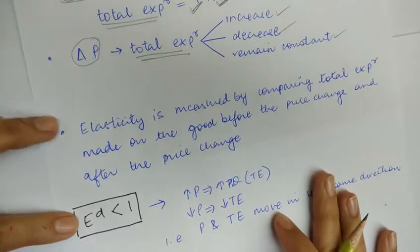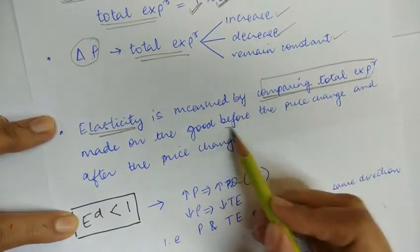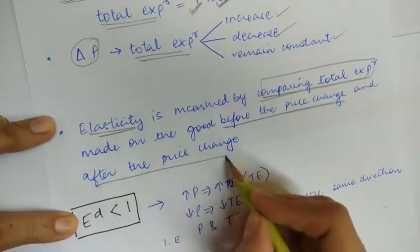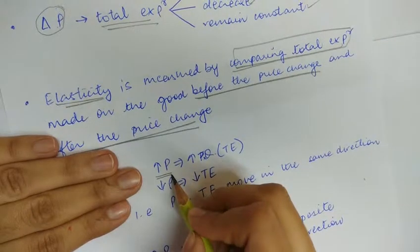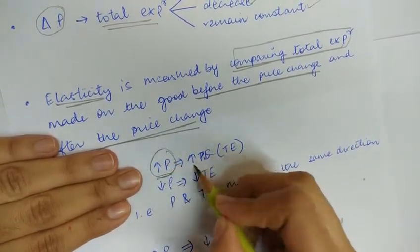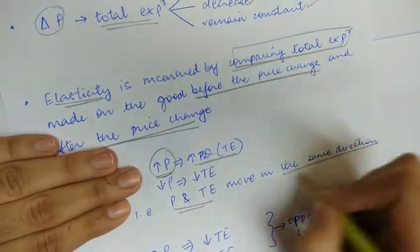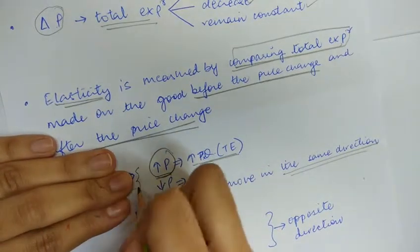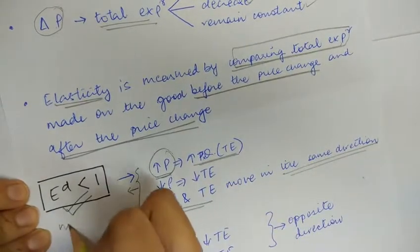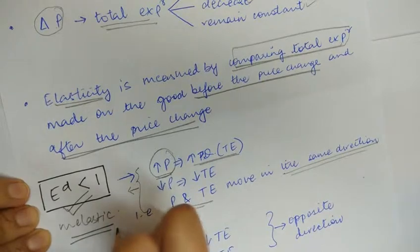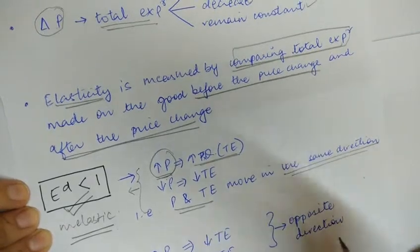Under this method, elasticity is measured by comparing the total expenditure made on the good before and after the price change. When the price of the commodity rises and the total expenditure also rises — that is, price and total expenditure move in the same direction — we say that the elasticity of demand is less than one, meaning demand is inelastic.